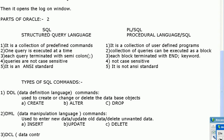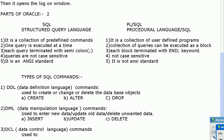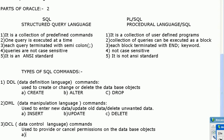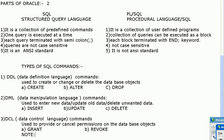DCL stands for Data Control Language. DCL commands are used to provide or cancel permissions on database objects. These commands are typically used through an application, and if you want to use them directly, you must be logged in as a DBA.